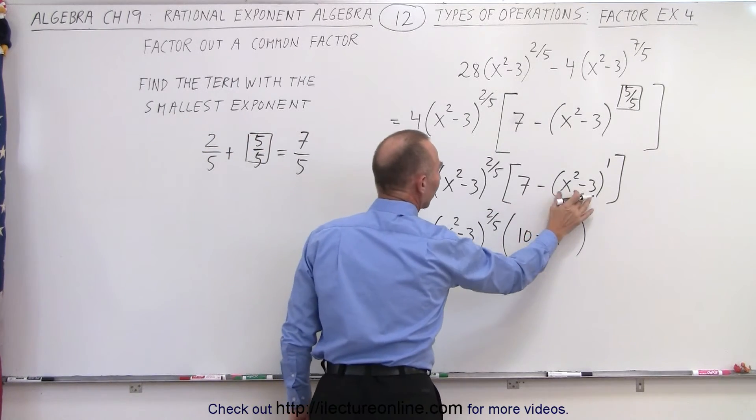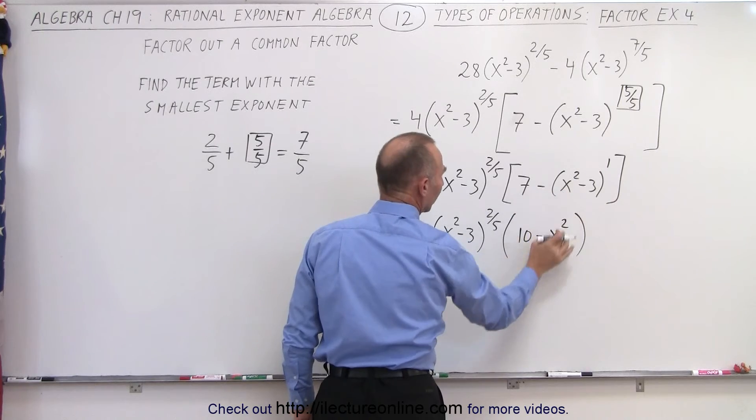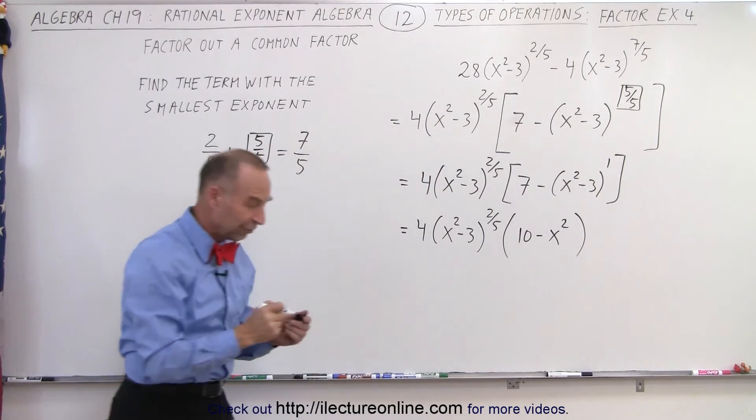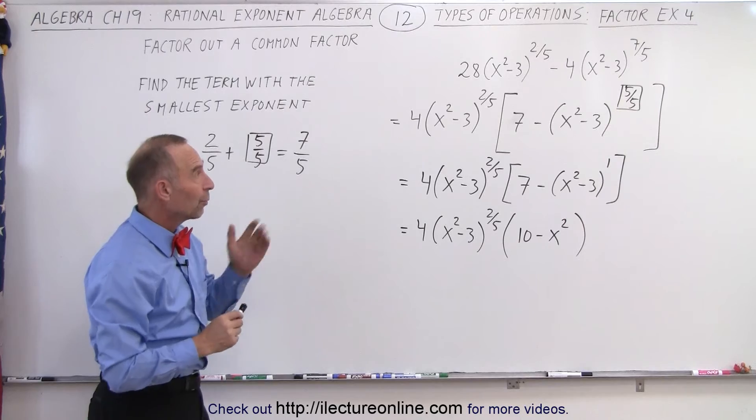So this then, 7 minus a minus 3 becomes 10, and a minus x squared. There we have that, and that will then be the final factored form of our original problem.